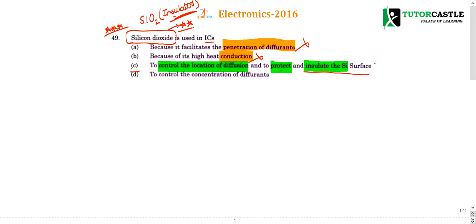The third option is: to control the location of diffusion and to protect and insulate the Si surface. This option suits appropriately — insulate the Si surface. The fourth option is to control the concentration of diffusion. Even though it mentions control of concentration of diffusion, the third option seems more appropriate.